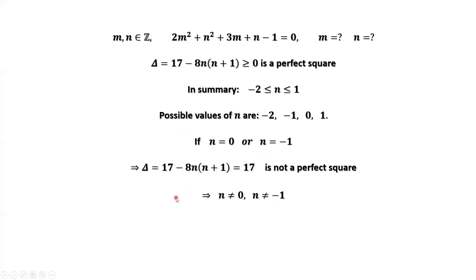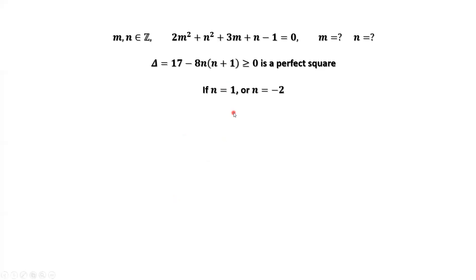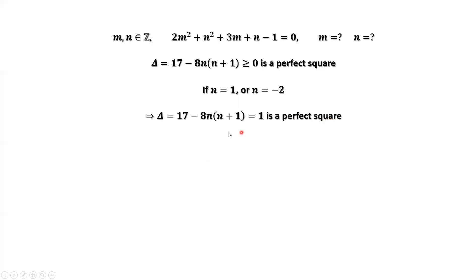Let's check the other two values for n: n = 1 or n = -2. If we replace n by 1, delta = 1, which is a perfect square. If we replace n by -2, we also get delta = 1, which is again a perfect square. Both satisfy the condition.